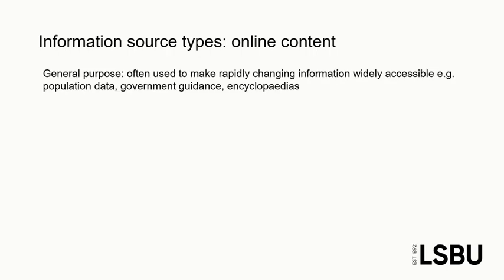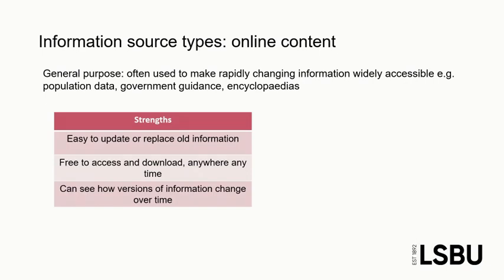Finally, let's look at scholarly online content. The purpose of online materials such as reports, guidelines and data is to make rapidly changing information widely accessible. By publishing some types of information online, we are able to change it quickly and therefore keep it up to date — this would be much more difficult, if not impossible, to do if the data was being printed in a book or a journal article. The benefit of using online information is that you can draw on the most up-to-date figures and evidence in your essay.